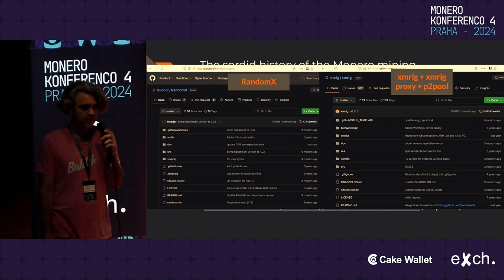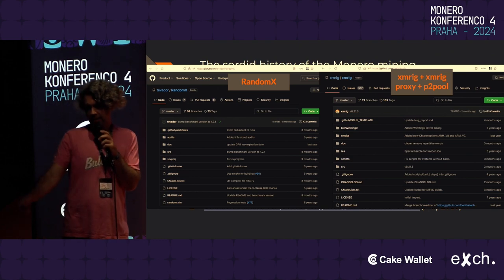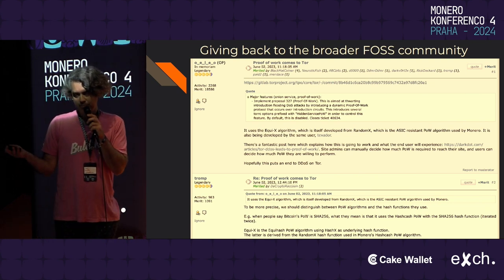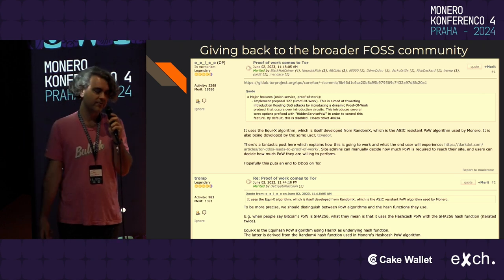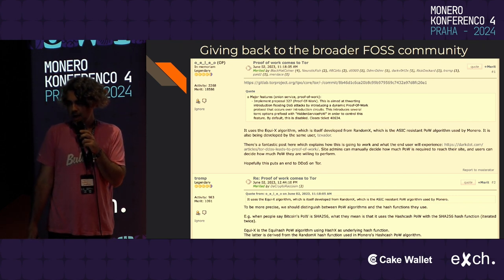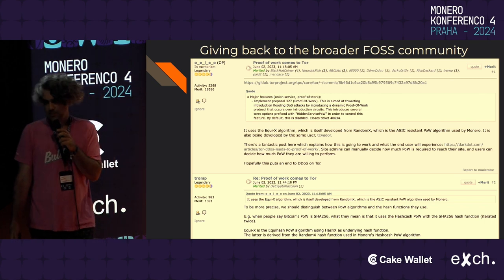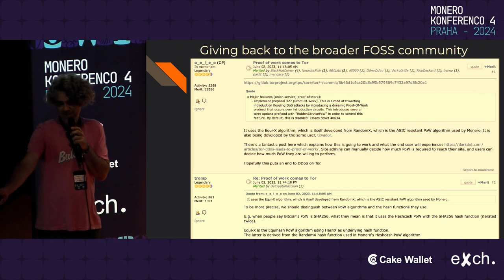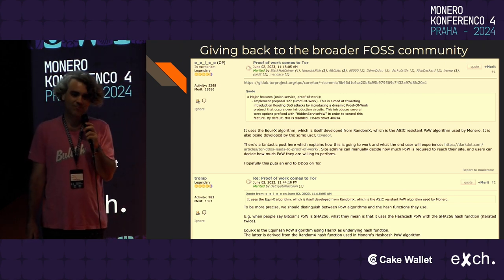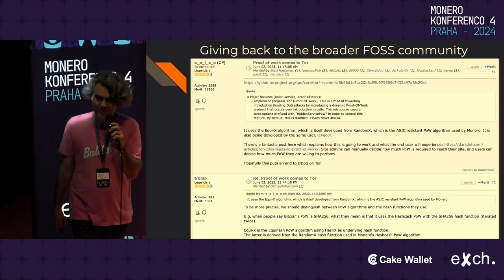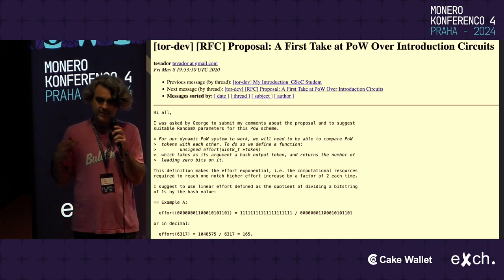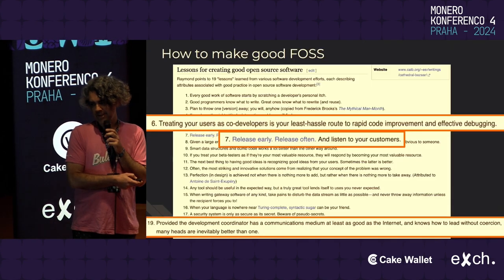There was also an ASIC released by Bitmain, which resulted in RandomX — kind of the redemption arc. As a result of all these closed-source shenanigans, we ended up with RandomX by a developer called tevedor, and we've reached a nice open-source mining stack with XMRig, XMRig Proxy, and P2Pool, primarily all developed by SChernykh. You can see in the commits they're about five and seven years old. And giving back to the broader FOSS community, this same proof-of-work — or a derivative of RandomX — is now used in the Tor network as a DDoS prevention mechanism.